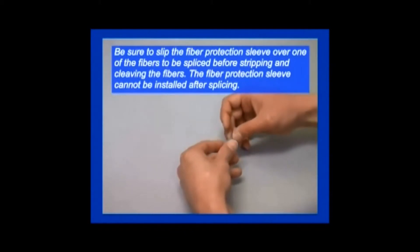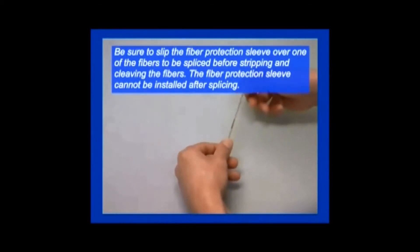The first step is to be sure to slip a fiber protection sleeve over one of the fiber ribbons to be spliced before stripping and cleaving the fibers. Once two fiber ribbons have been joined, a technician cannot slip the protection sleeve onto the spliced joint later.